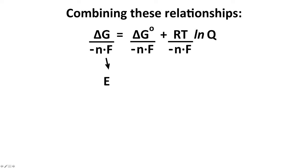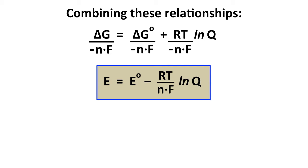If we combine those two relationships, start with our ΔG equation, ΔG = ΔG° + RT ln Q and divide both sides by -nF. Then ΔG over -nF is equal to E, the cell potential. ΔG° over -nF equals E°, the standard cell potential. And RT over -nF ln Q equals -RT over nF times ln Q. So combining the Gibbs free energy relationship under non-standard conditions with the Gibbs free energy change and cell potential relationship, we get the following equation.